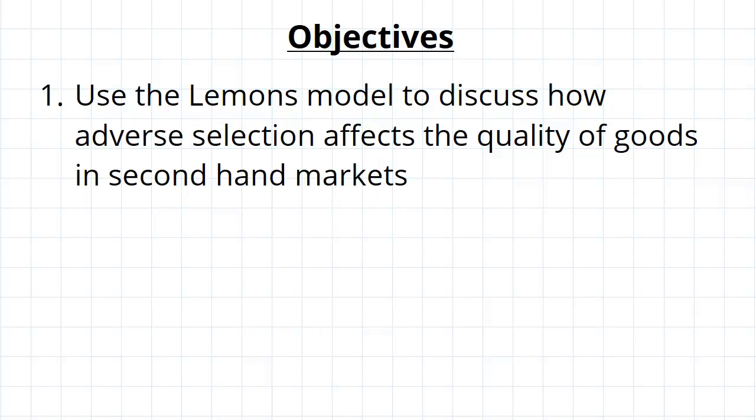G'day guys, now that we know what asymmetric information is and more importantly what adverse selection is, we're going to go into what's called the Lemons model to discuss how the quality of goods in secondhand markets is affected by the presence of adverse selection.